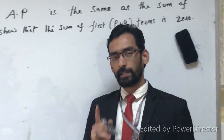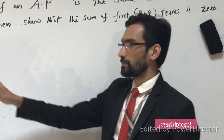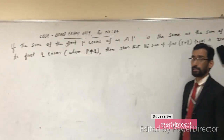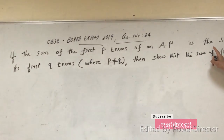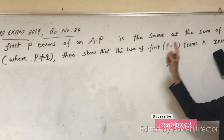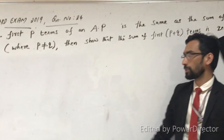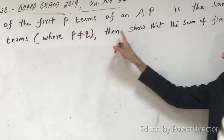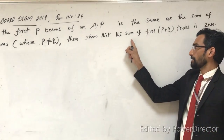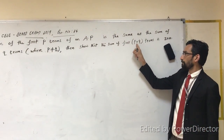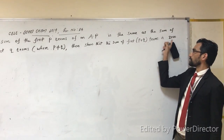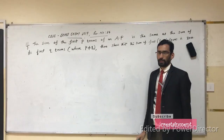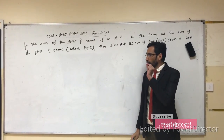First of all, we can read the question once. See, if the sum of the first P terms of an AP is the same as the sum of its first Q terms, but P is not equal to Q, then show that the sum of the first P plus Q terms is zero.